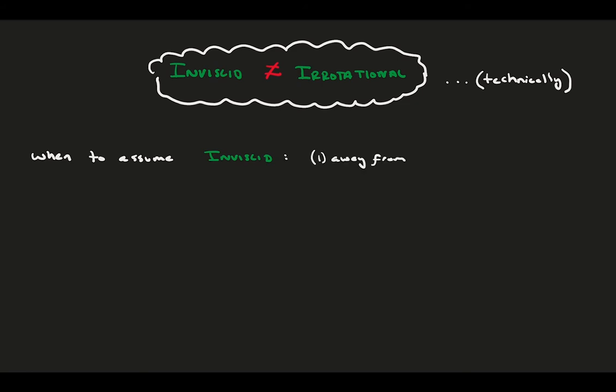For an inviscid flow, you want to be well out of the boundary layer and away from solid surfaces. The no-slip condition produces high shear, making viscosity important near a solid surface.